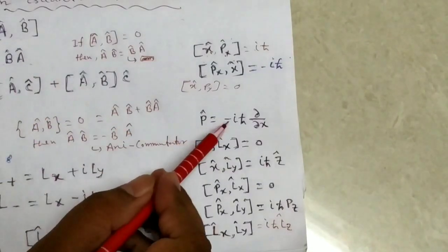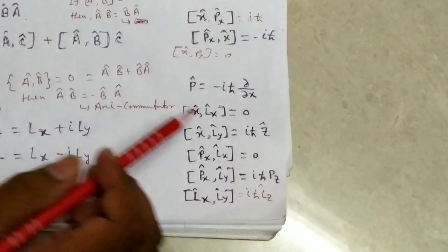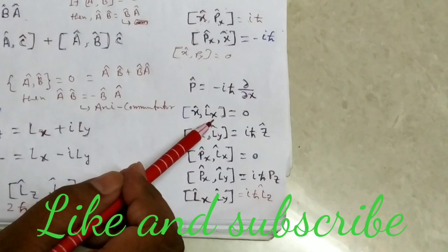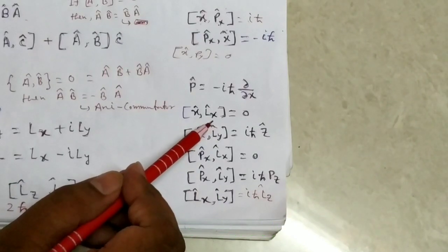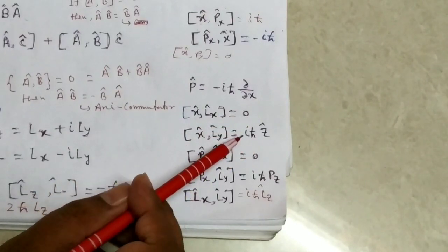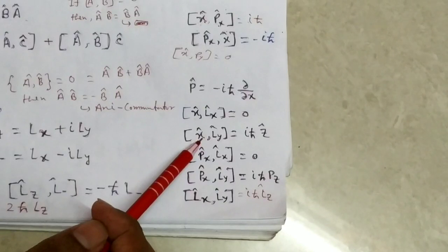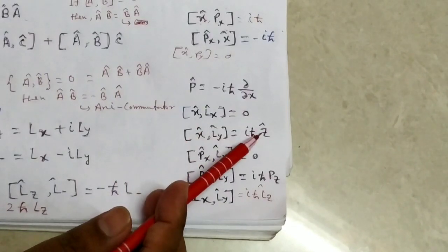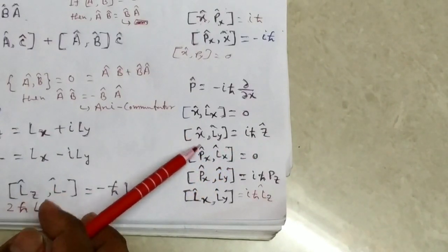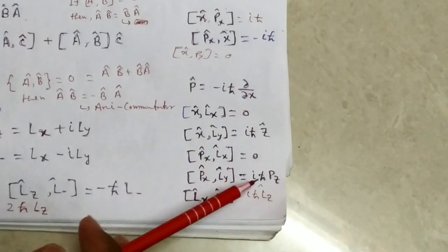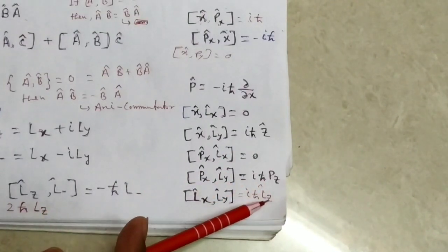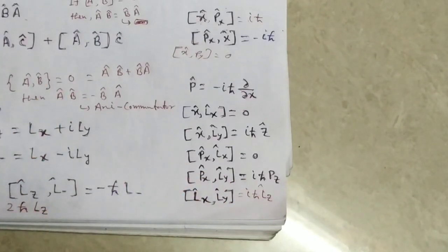Another relation: if x is the position operator and L_x, L_y, L_z are angular momentum operators, then [x, L_x] = 0, [x, L_y] = i*h_bar*z. Similarly, [p_x, L_x] = 0, [p_x, L_y] = i*h_bar*p_z, and [L_x, L_y] = i*h_bar*L_z. Please practice these commutator relations.